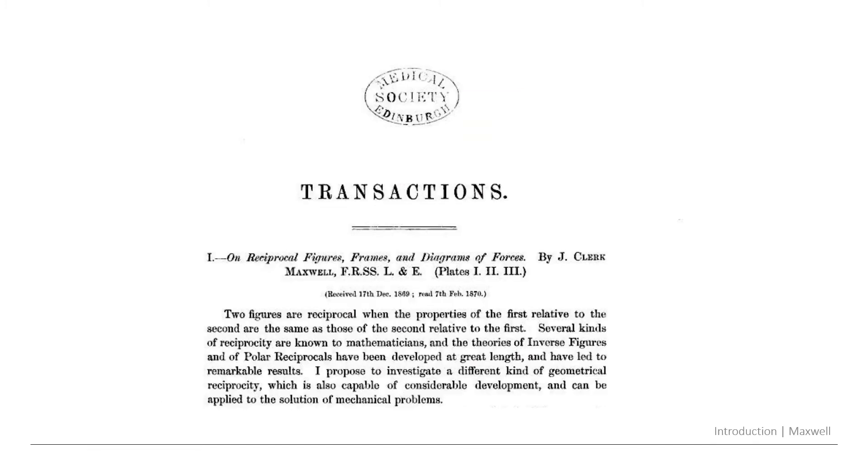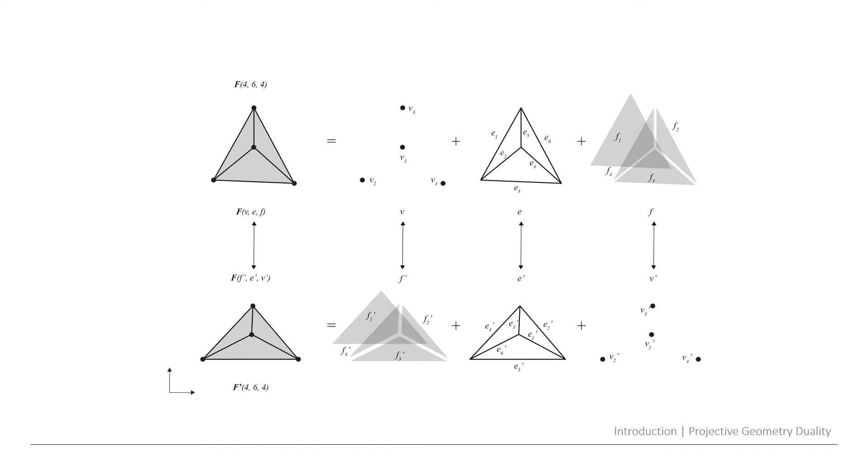This is the paper by Maxwell in which he does use polarities in order to obtain a reciprocal pair of polyhedra which when they're projected on the plane they directly generate a reciprocal pair of form and force diagrams. Following this construction basically we have four interlinked objects as we're going to see further on.